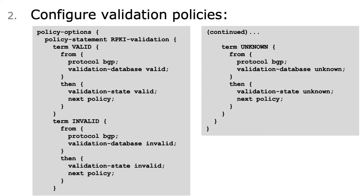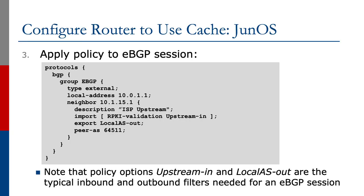This policy will be part of other incoming BGP policies on the eBGP session. Once we've done this, we apply the policy to the eBGP session itself. The slide shows step 3, which is applying the inbound policy RPKI validation to the neighbor called ISP upstream. We check validation state first before running the other policy called upstream-in. This will flag in the BGP table whether the prefix is valid, invalid, or not found.